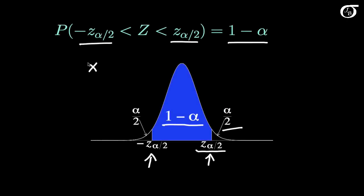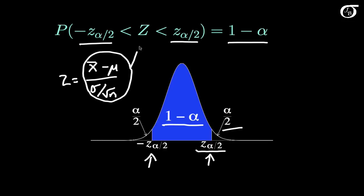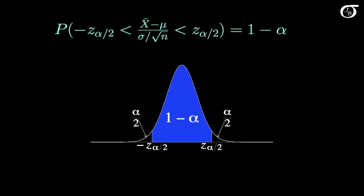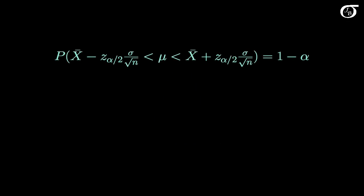Recall that x bar minus mu over sigma over the square root of n has the standard normal distribution — I call this z because it has the standard normal distribution. So I can substitute this quantity into the equation. The probability that this random variable takes on a value between minus z sub alpha over 2 and z sub alpha over 2 is 1 minus alpha. Using a little algebra to isolate mu, the probability that mu gets captured between x bar minus z sub alpha over 2 times sigma over the square root of n, and x bar plus z sub alpha over 2 times sigma over the square root of n, is 1 minus alpha.